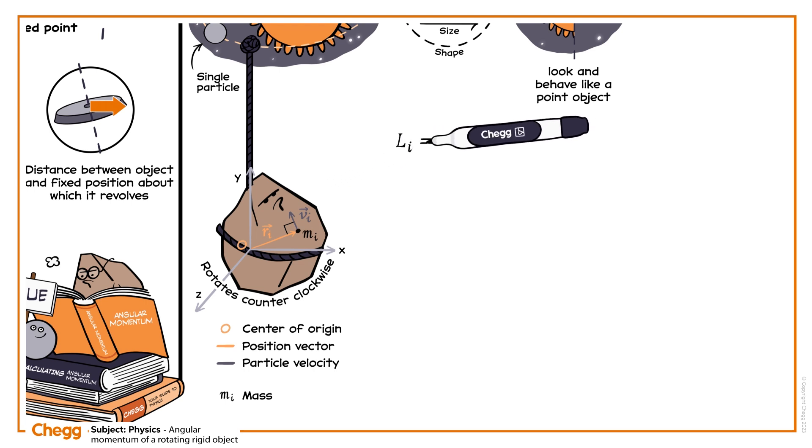To calculate the particle's angular momentum, we could simply take our equation from earlier. The angular momentum equals cross product of the mass of the particle, the position vector, and the object's velocity.